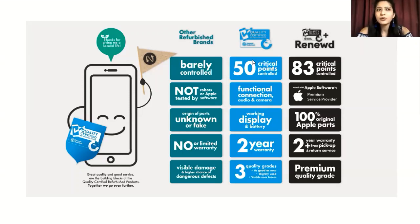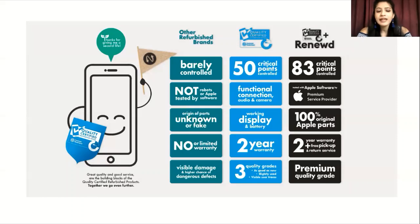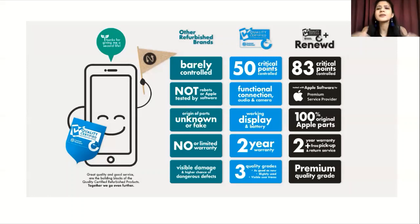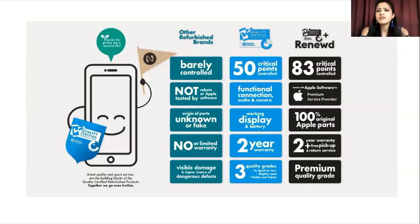Brand new products are tested on the basis of different categories, and the same happens with refurbished products too. The verification parameters include display, build structure, audio quality, FM, colorization, screen scratches, buttons, data wiping, OS system, CPU, GPU, NFC, infrared port, battery life, video recording quality, and internal factors. Both product types are judged on these same categories, making them almost the same.